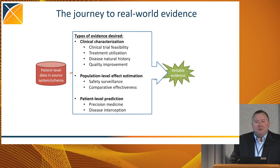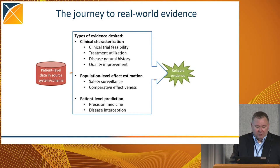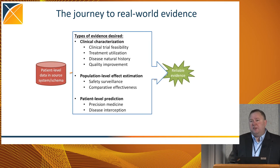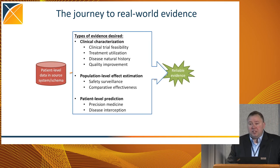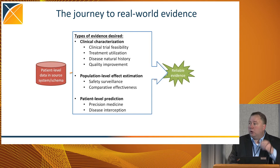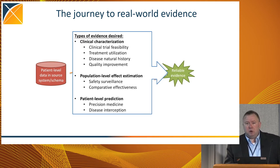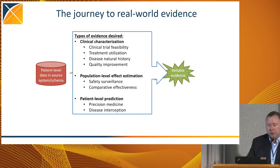Another reason why this path from data to evidence is often a meandering one is because there is no one size fits all in terms of type of evidence that's desired. In the framework that we have in Odyssey, we usually classify the types of evidence into three primary buckets: clinical characterization, where you are performing descriptive statistics; population level effect estimation, where we're really focused on causal inference questions; and patient level prediction, where we're applying machine learning algorithms.